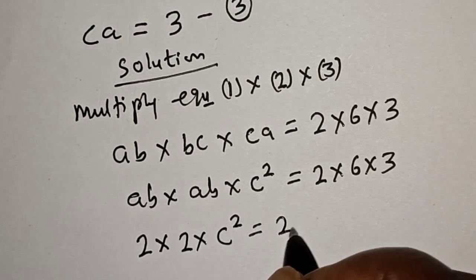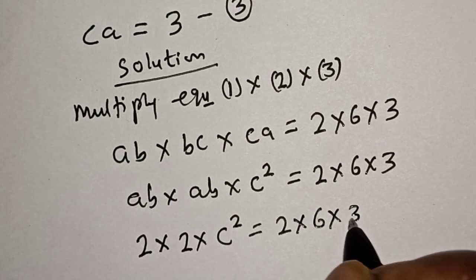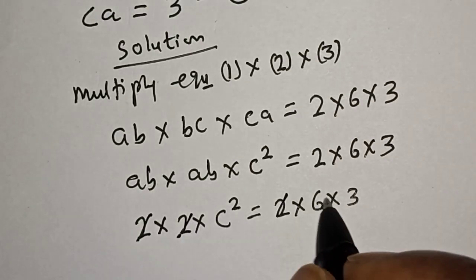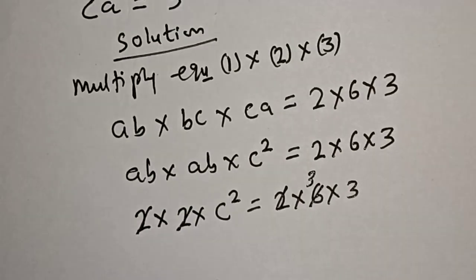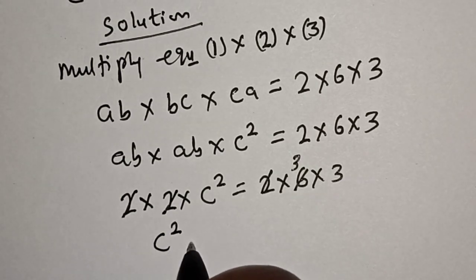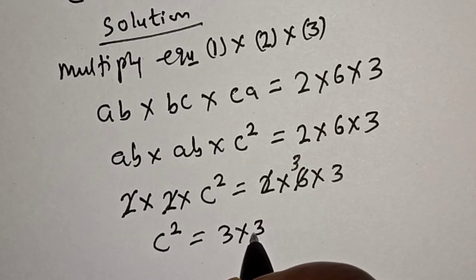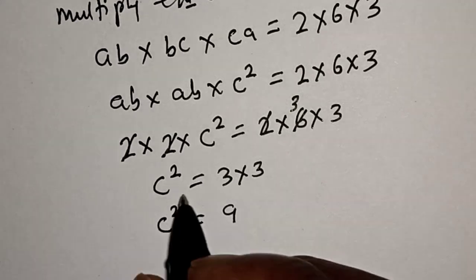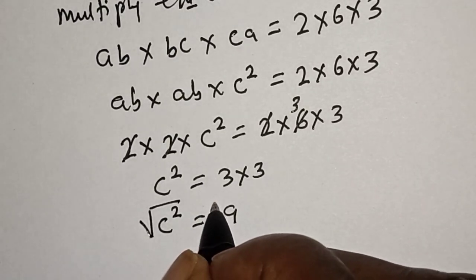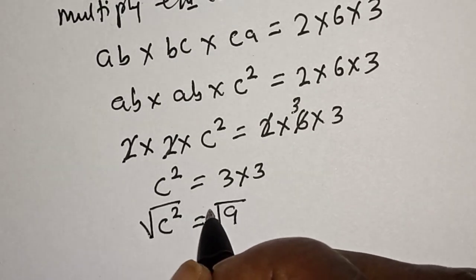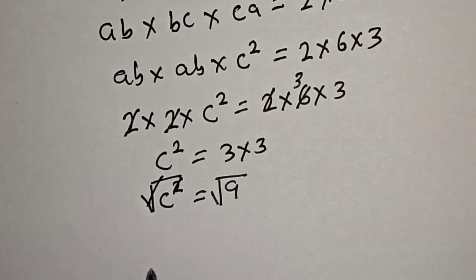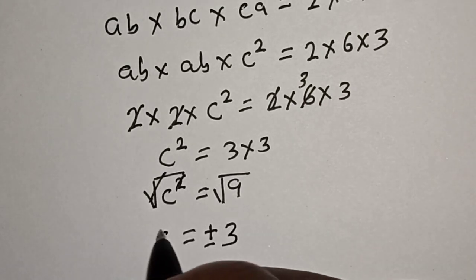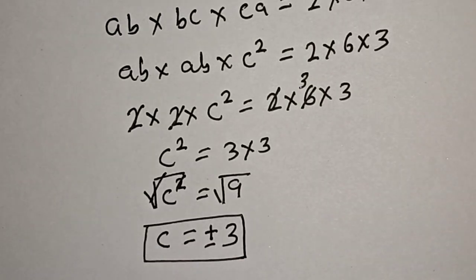Each variable appears twice, so we have C² equal to 9. Let's take the square root of both sides — this cancels, and C is equal to plus or minus 3. That is the value of C.